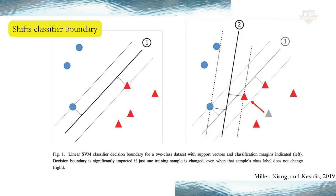How does it work? It doesn't take much. If you move one data point, you can throw off the entire model. How much poisoning does it take to undermine your machine learning and your end goal? The short answer is not much.